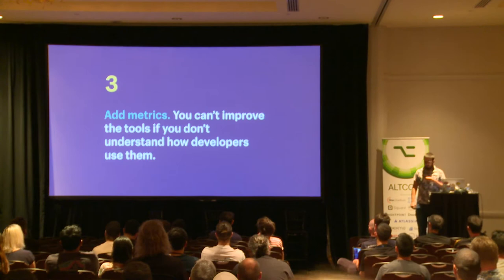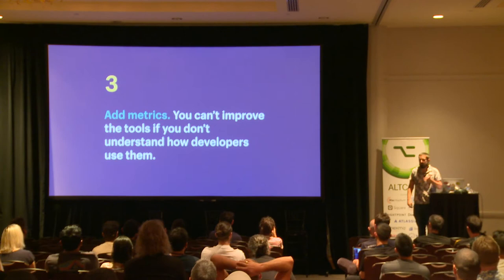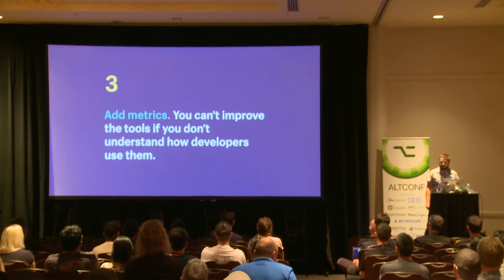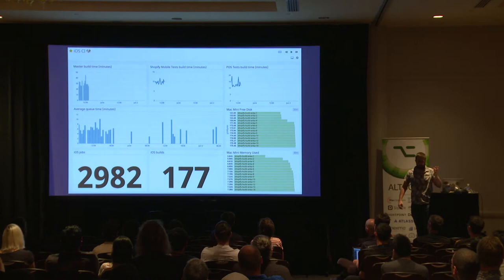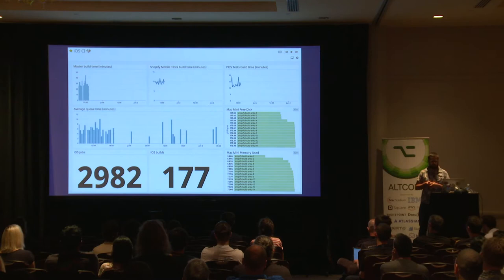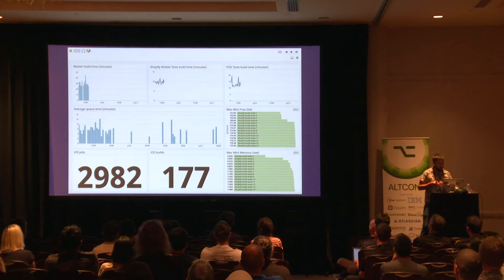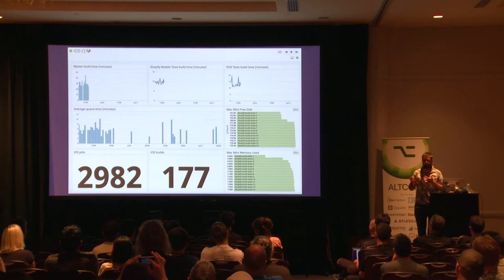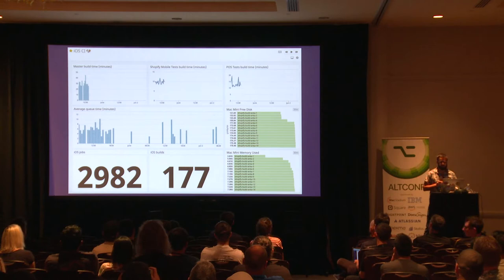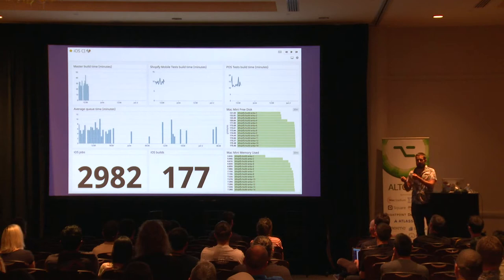If you give users a tool, you need to understand how they're using it—not just 'use it, that's it.' You want to understand what they need and how they're using it, otherwise you can't improve. At Shopify, our tooling infrastructure reports most metrics to Datadog. You can see how many builds are being run, the time they take, how many hosts we have, memory, disk space. If something isn't right, like hosts running out of space, we get alerts. Always add metrics to your tools, because when you prioritize work, you want to focus on things people find valuable.